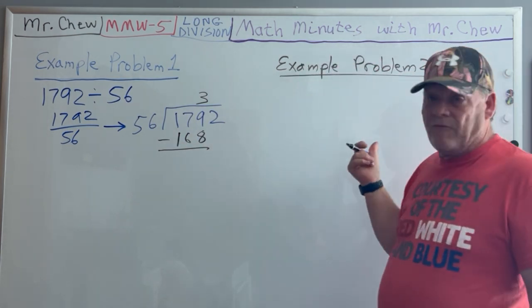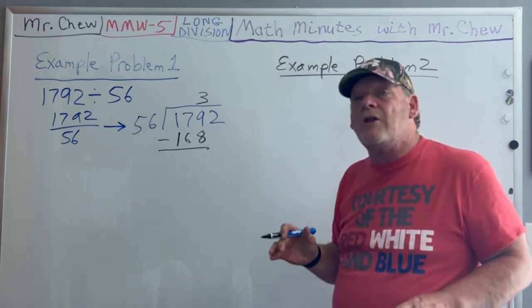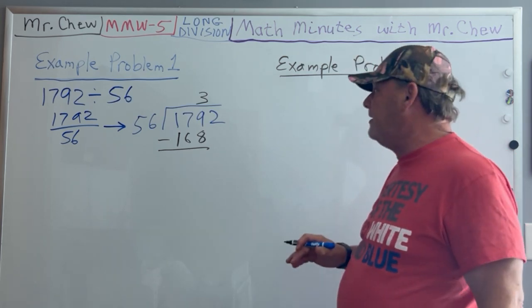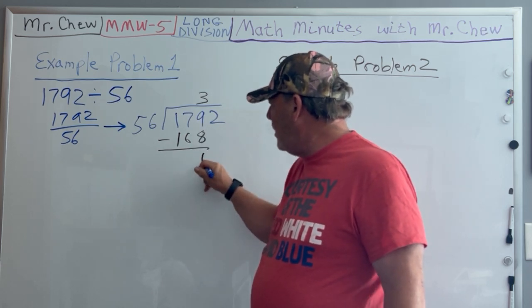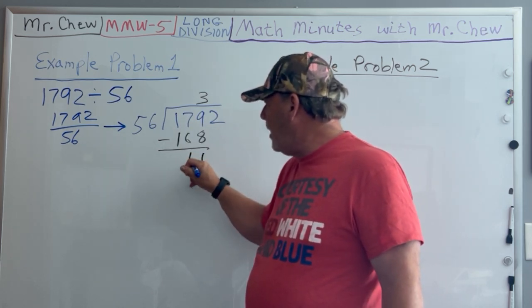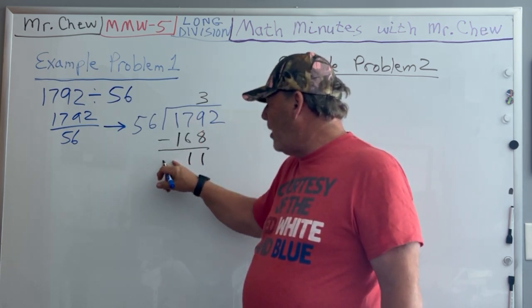Now I subtract—this is the way you do this with numbers. Eight from nine is one, six from seven is one, one from one is zero. I don't put the zero down here.